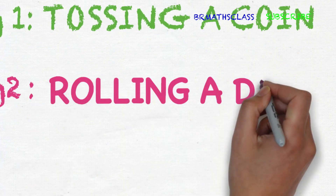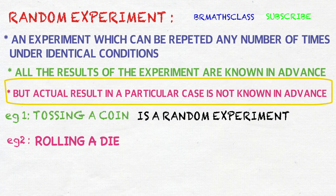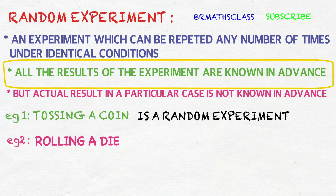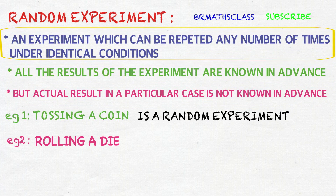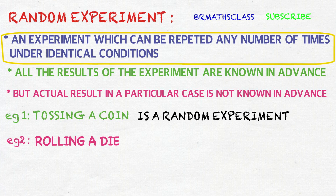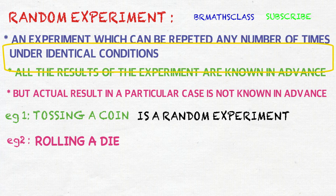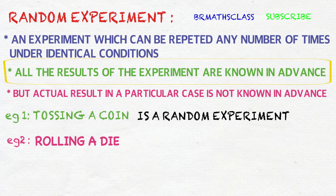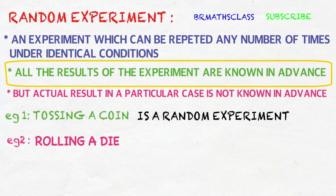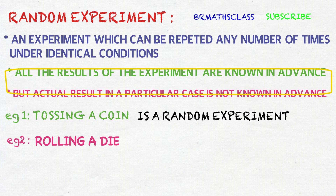Second example: rolling a die. Is rolling a die a random experiment? First condition: we can roll a die as many times as we want under identical conditions, so the first condition holds good. Second condition: all the results of the experiment are known in advance — when a die is rolled, it results either 1, 2, 3, 4, 5, or 6. So the second condition holds good.